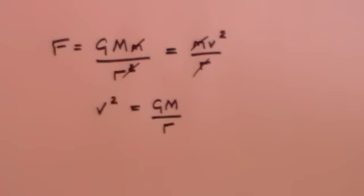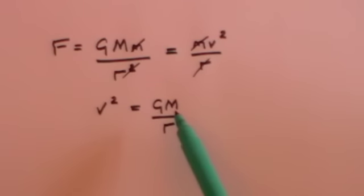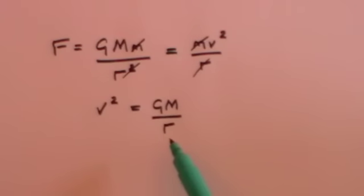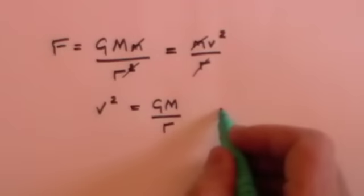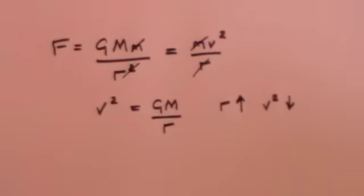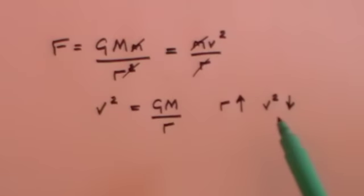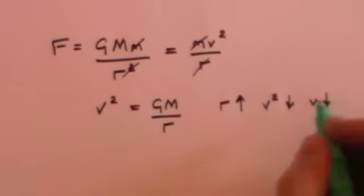What you can see here is that the velocity of the Earth is dependent on G, which is a constant, the mass of the Sun, which for these purposes is a constant, divided by the distance between the Earth and the Sun. Whenever you've got a term in the denominator, what that means is that as the radius increases, then v squared decreases. If this term increases, this term decreases. And obviously if v squared decreases, then v itself decreases.